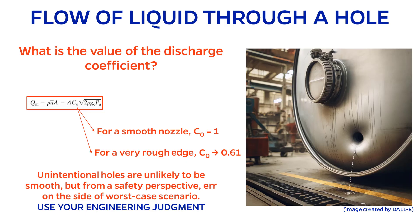Thinking a little deeper, a hole that comes about accidentally is very unlikely to be smooth. It might be caused as a result of corrosion, or by a puncture, which means that there would be some frictional loss.